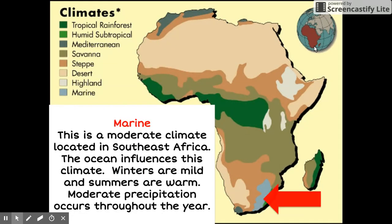As its name suggests, the marine climate is located along the coast. This is a moderate climate located in Southeast Africa. The ocean influences this climate. Winters are mild and summers are warm. Moderate precipitation occurs throughout the year.